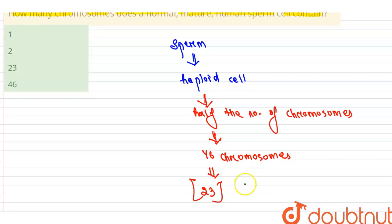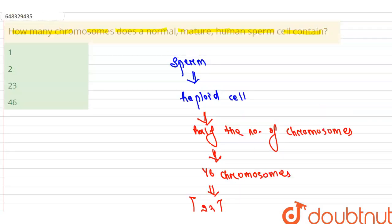So the answer will be option C, that is 23. Options 1, 2, and 46 are eliminated as wrong answers. I hope you understand the question and the answer. Thank you.